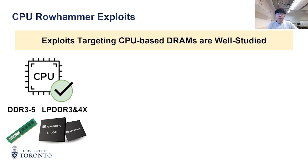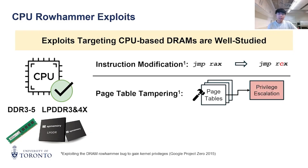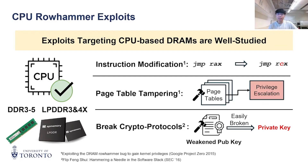Rowhammer exploits targeting CPU-based DRAMs are well studied on both DDR and LPDDR chips. On CPUs, common exploits try to perform privilege escalation, such as instruction modification and page table tampering, as well as targeting confidential data like keys in cryptographic protocols.